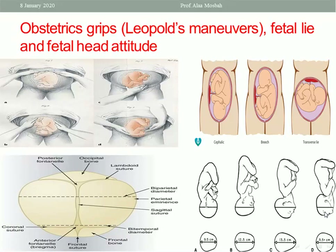Regarding fetal head attitude: with a well-flexed head it is vertex presentation; with a moderately flexed head it is also vertex presentation but with a larger engaging diameter. With a deflexed head it is brow presentation, presented by the frontal bone. With an extended head it is face presentation, with the chin felt vaginally as the denominator. Brow presentation with a persistent brow is undeliverable.